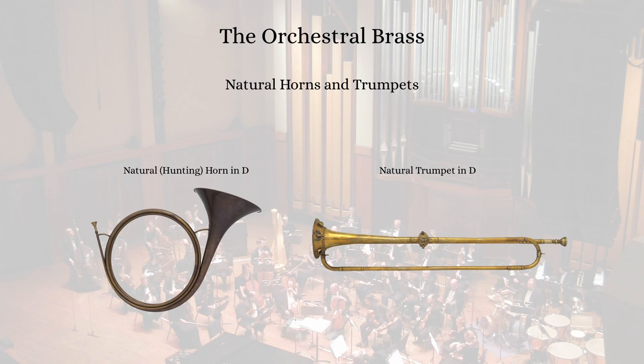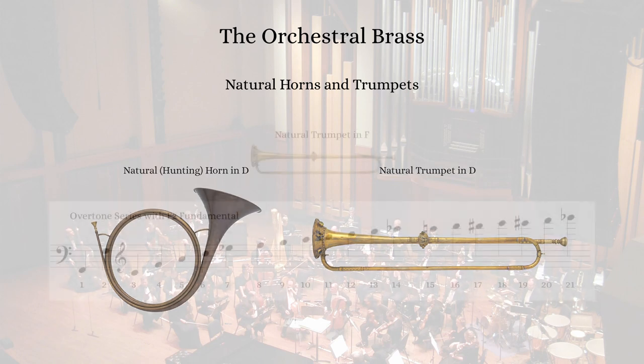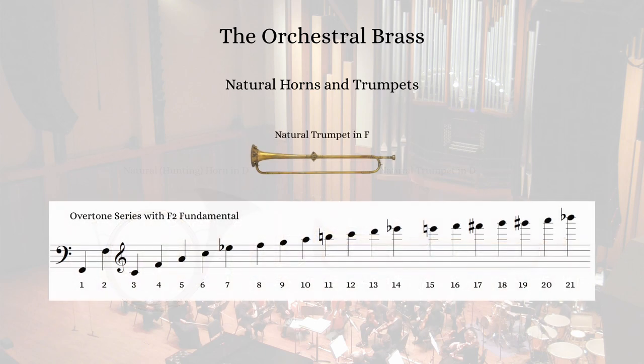If you haven't seen my video on the harmonic series, now might be a good time to give that a view. In the second Brandenburg Concerto, Bach wrote for natural trumpet in F, which meant that only the notes of the F harmonic series were possible on the instrument, although the best trumpet players were capable of playing chromatic notes outside of the harmonic series through various techniques. The different partials were played using changes in embouchure and lip pressure, and tuning could be adjusted using the embouchure as well.